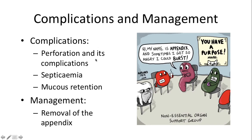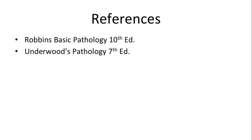Complications of acute appendicitis include perforation, which can lead to peritonitis and septicemia. Chronic luminal obstruction can cause mucus to build up inside the appendiceal lumen, leading to mucus retention or a mucocele. Management of acute appendicitis is essentially removal of the appendix — appendectomy. References used for this topic were Robbins Basic Pathology, 10th edition, and Underwood's Pathology, 7th edition.